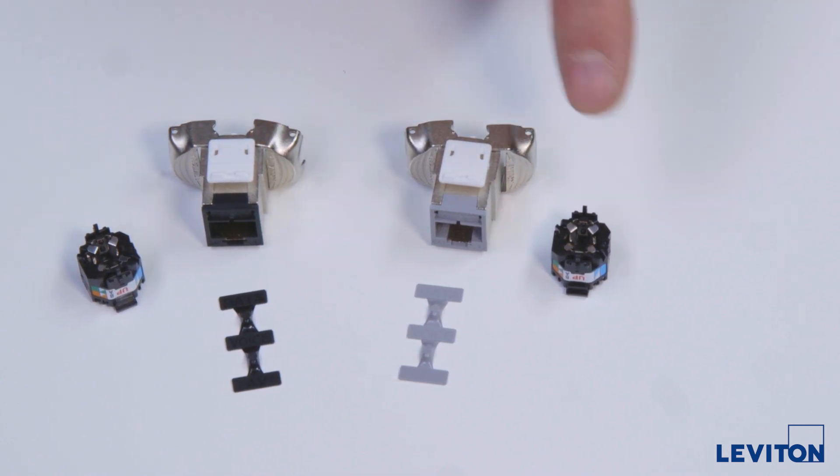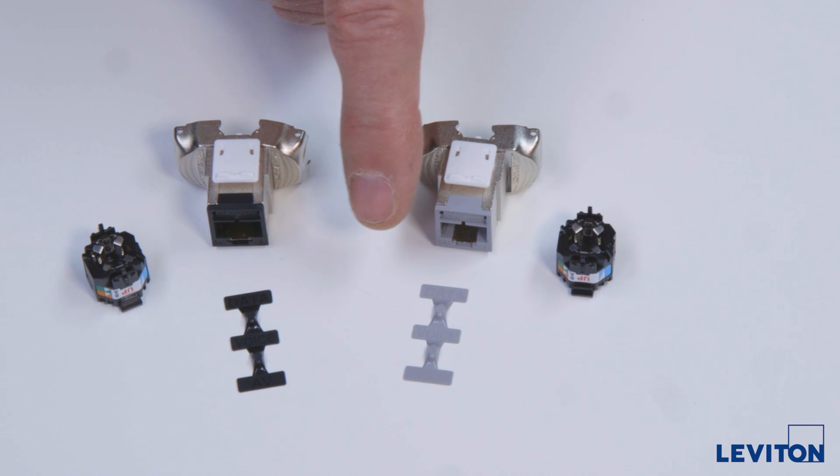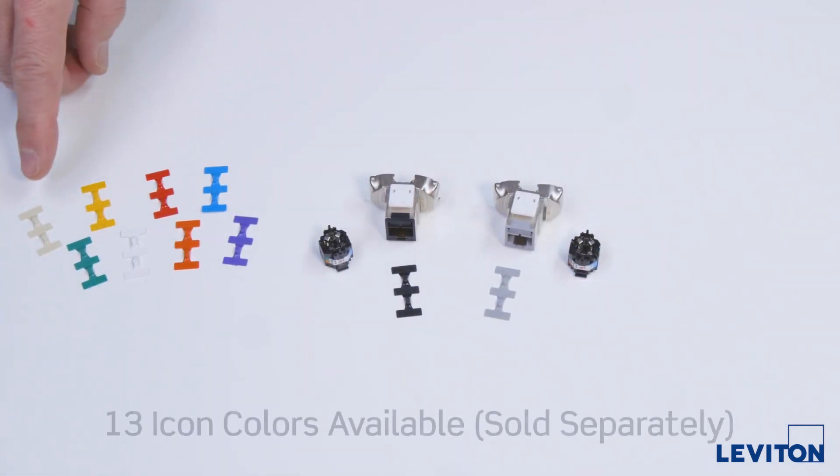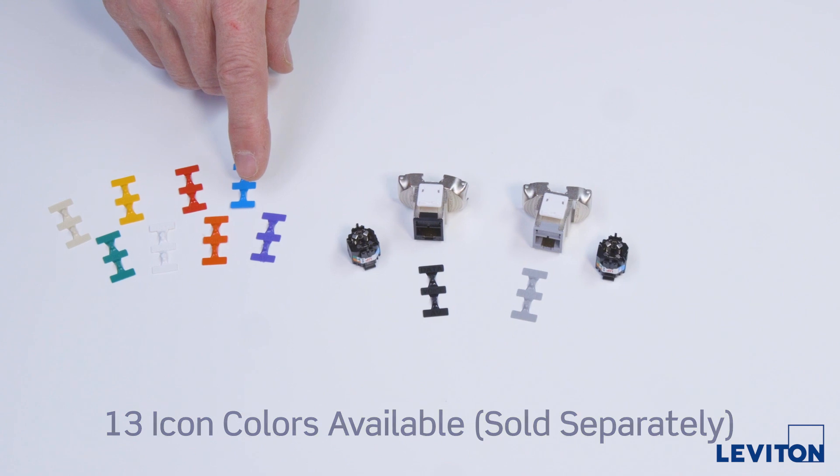This is the body, the wire manager, and the color-matched icons. The icons also come in additional colors so that you can color code your connectors.